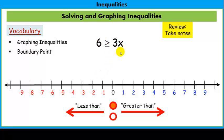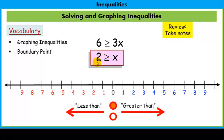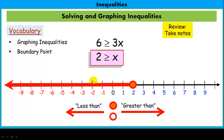In an inequality like 3x ≤ 6, we handle it exactly like an equation. We isolate x by dividing both sides by positive 3, and we get x is less than or equal to 2. This is our solution. Our boundary point is at 2. Since it's less than or equal to, we fill in the boundary point, and all numbers less than 2 go to the left — that's the graph.